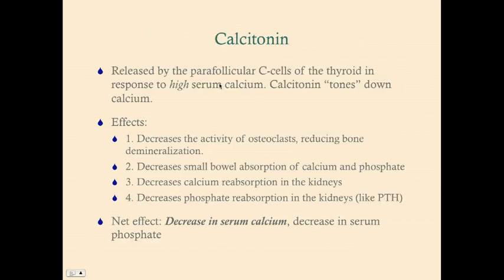Calcitonin is released by the parafollicular C cells of the thyroid in response to high serum calcium — it tones down the calcium. Its effects are all direct: it decreases osteoclast activity, reducing bone demineralization; it decreases small bowel absorption of calcium and phosphate; and it decreases calcium reabsorption in the kidneys. Like PTH, it also decreases phosphate reabsorption in the kidneys. The net effect is a decrease in serum calcium and phosphate, though the phosphate decrease is not clinically relevant.